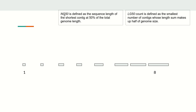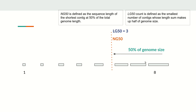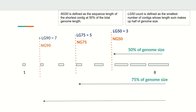Now for NG50: instead of using the assembly size, we use the known genome length as a constant. We calculate 50 percent of the genome size and find how many contigs from longest down reach that threshold. The same concept applies for LG50, NG75, LG75, NG90, and LG90 — the NG value decreases and the LG value increases as the percentage level increases.